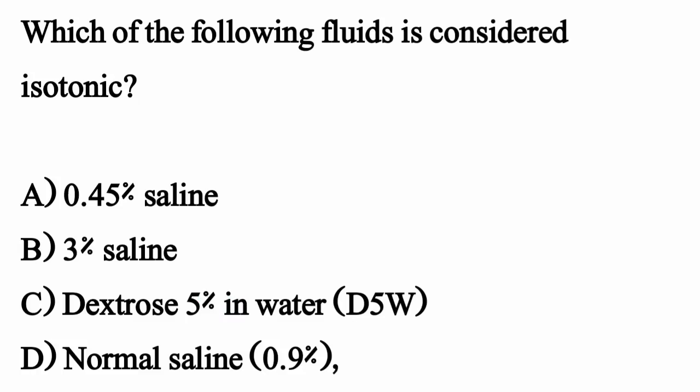Which of the following fluids is considered isotonic? The correct option is option D: Normal saline 0.9%.